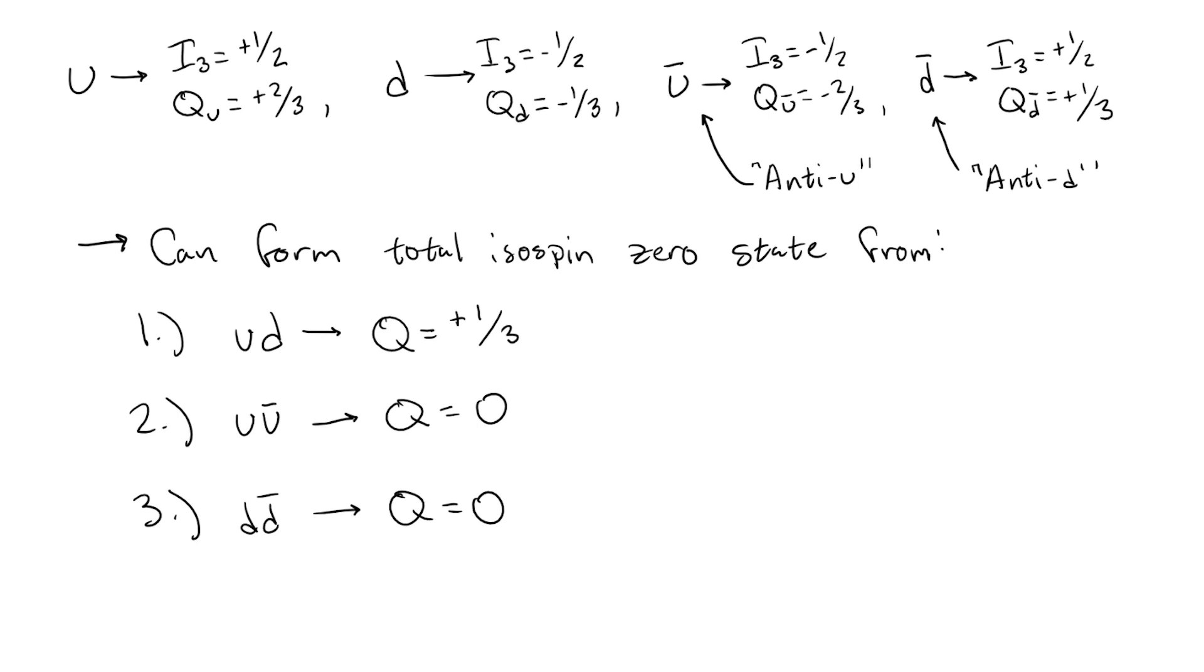However, only the latter two cases work out to give the correct electric charge of the omega meson, and so we can write the omega meson as a linear combination of the up-anti-up state and the down-anti-down state.